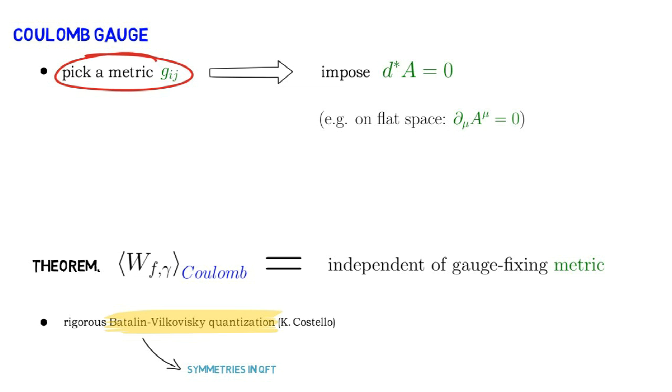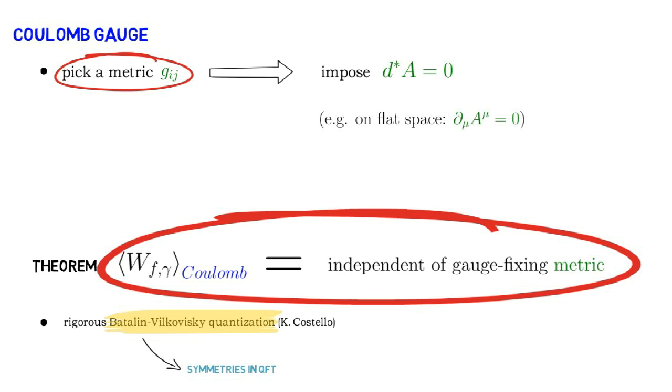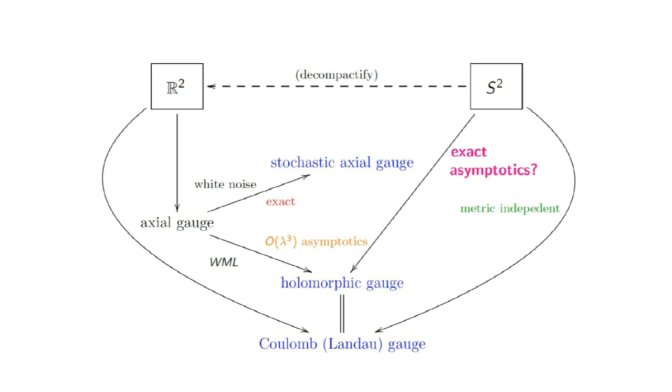While this formalism is quite technical, it is the only rigorous general formulation of the Batalin-Vilkovisky quantization method in Euclidean signature that I am aware of. Establishing gauge invariance using this formalism is thus an important step in making essential features of perturbative Yang-Mills theory mathematically rigorous. So going back to our main diagram, our result on Coulomb gauge is indicated by the highlighted area.